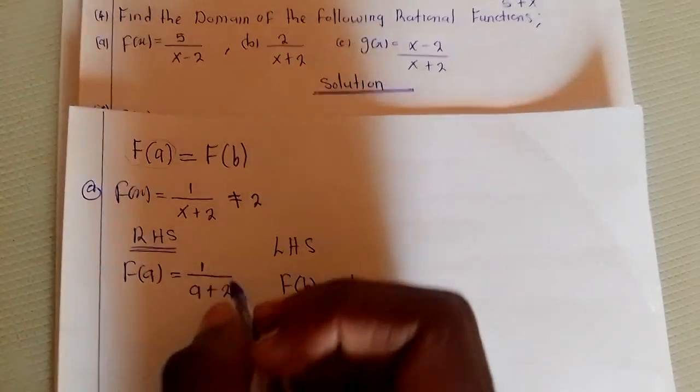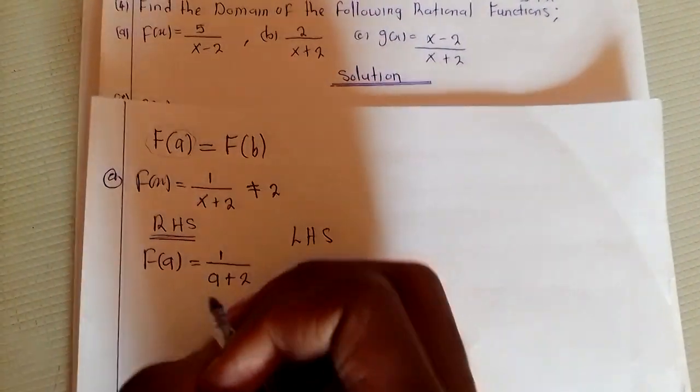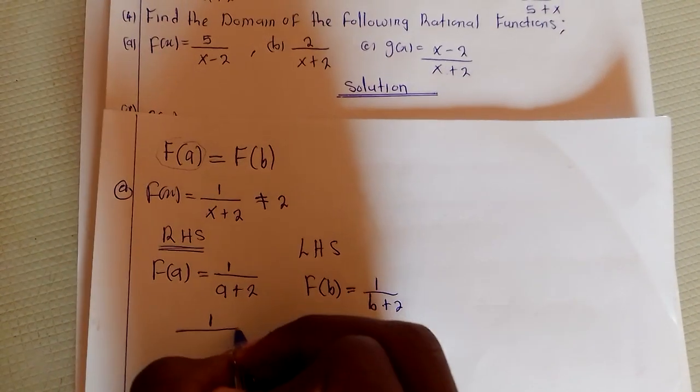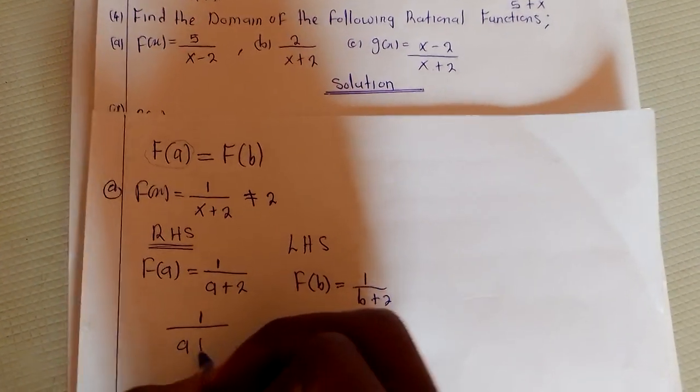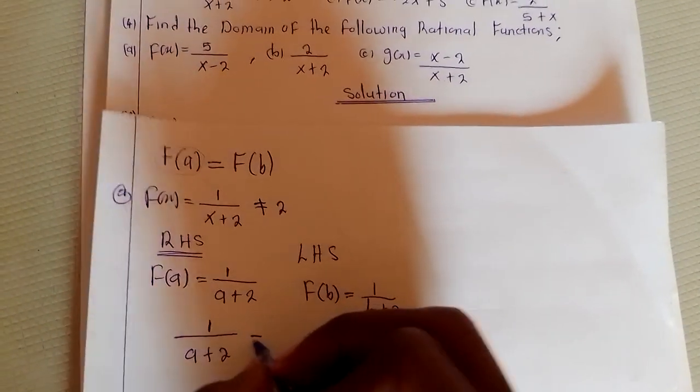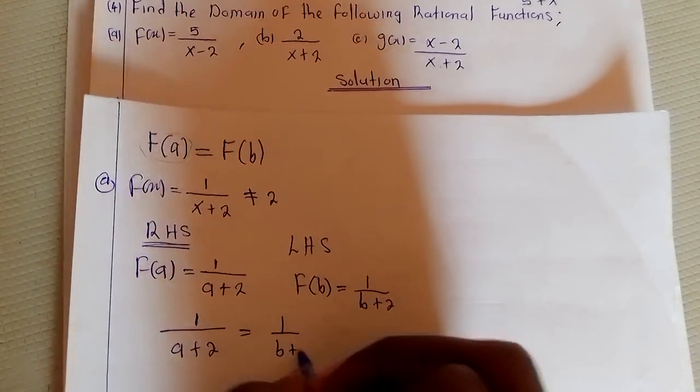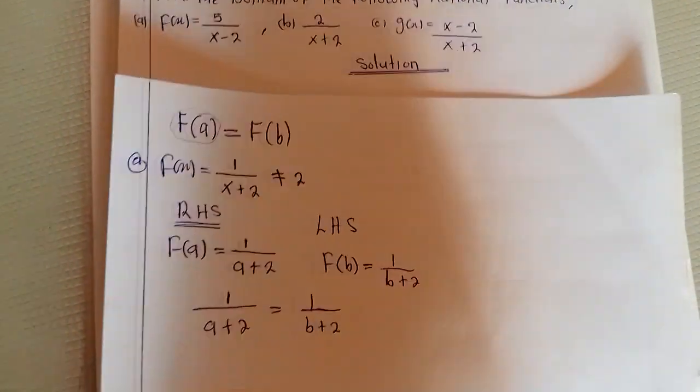Now, they are saying that the right-hand side and the left-hand side must be the same, meaning we are going to have one over A plus two equal to one over B plus two, like this.